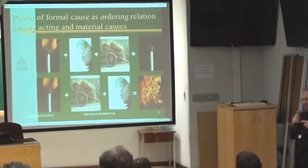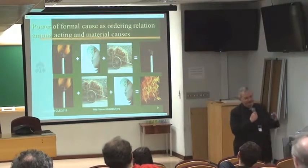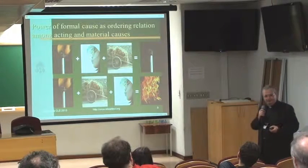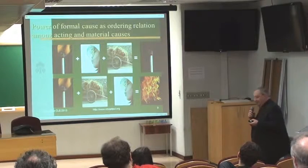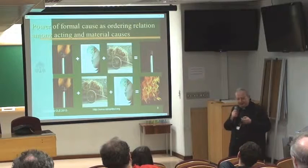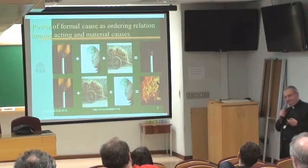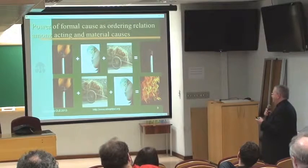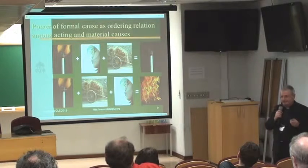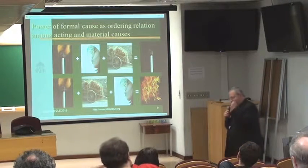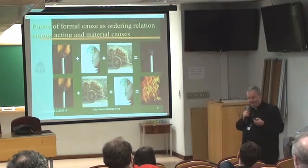This is formal cause, according to the Aristotelian approach: an ordering relation among acting and material causes without any violation of conservation principles of physics. Forms are not acting — it is ordering. And ordering in quantum field theory means a very deep idea, because it is related with quasi-probabilities and the Wigner distribution. So that ordering is something that cannot be reduced to the classical set-theoretic approach to the ordering relation.